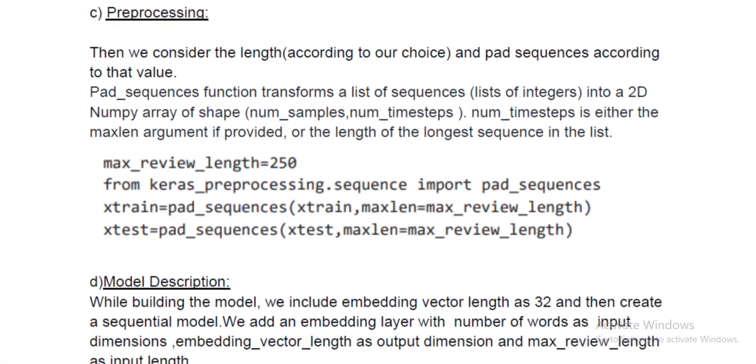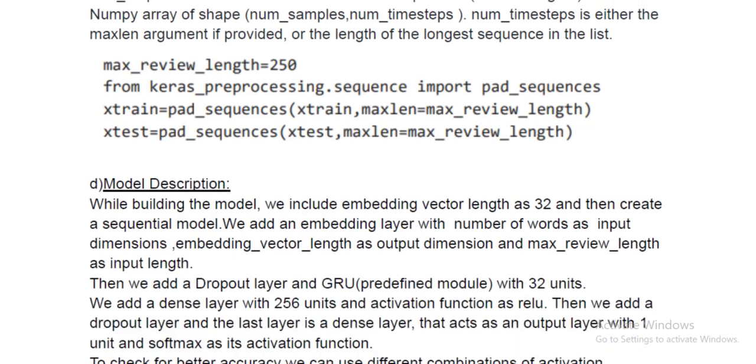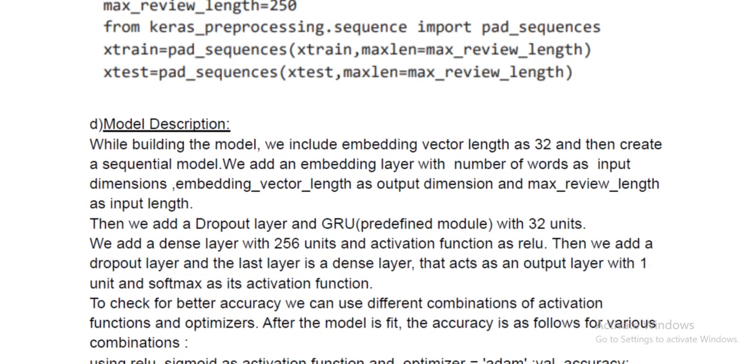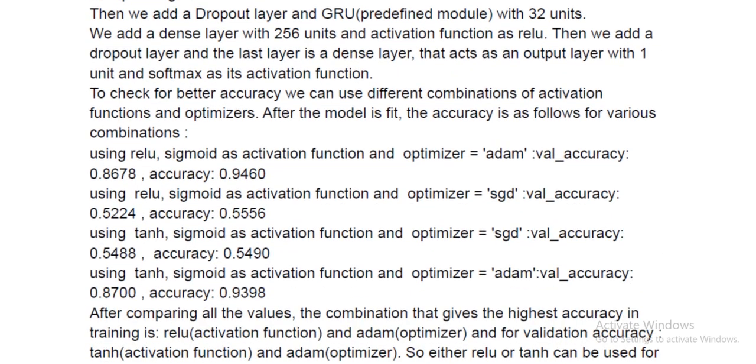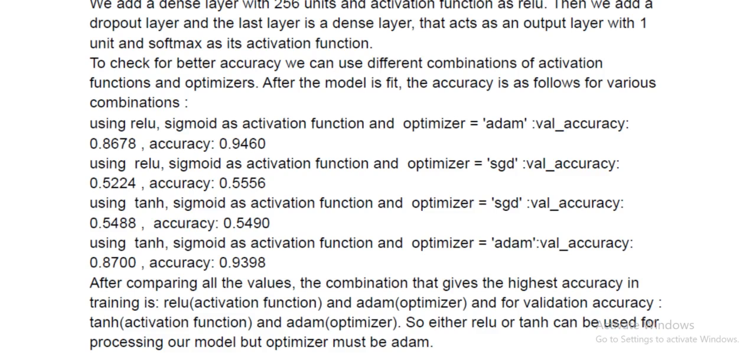I'm going to keep the same max review length of 250 and the same embedding vector length as 32. My strategy would be the same: choosing different activation functions of relu, sigmoid, or tanh, and different optimizers like SGD and Adam. I'm going to test for its accuracy.